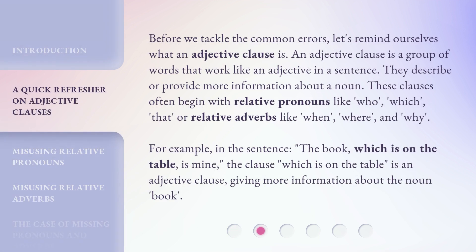Before we tackle the common errors, let's remind ourselves what an adjective clause is. An adjective clause is a group of words that work like an adjective in a sentence. They describe or provide more information about a noun. These clauses often begin with relative pronouns like who, which, that, or relative adverbs like when, where, and why.